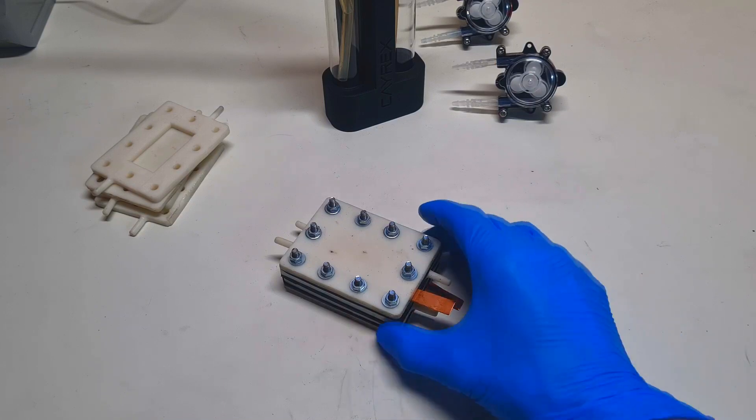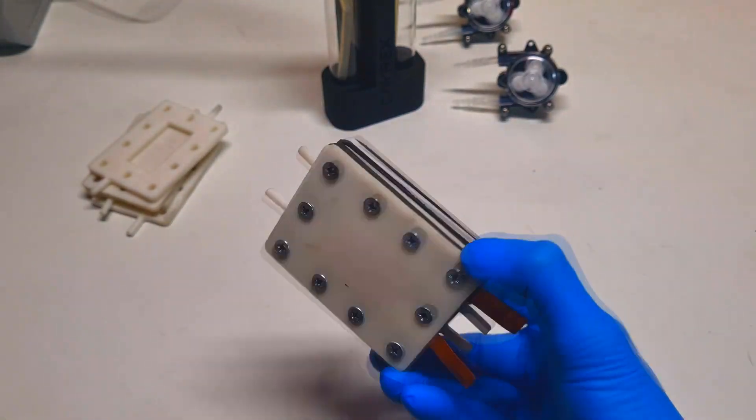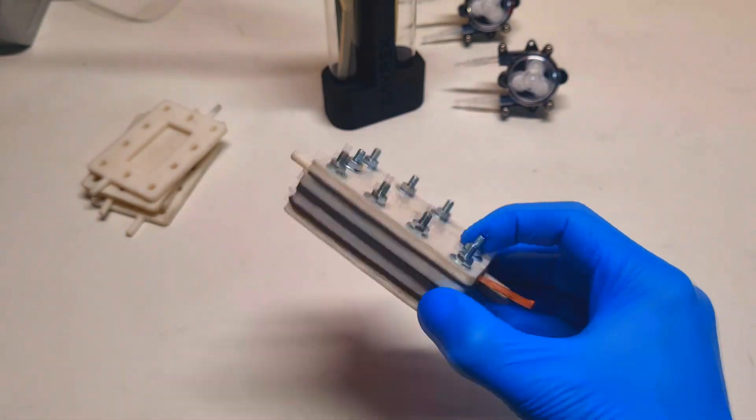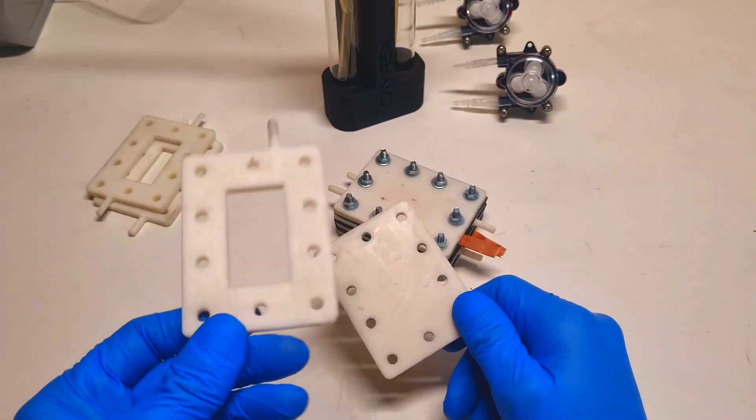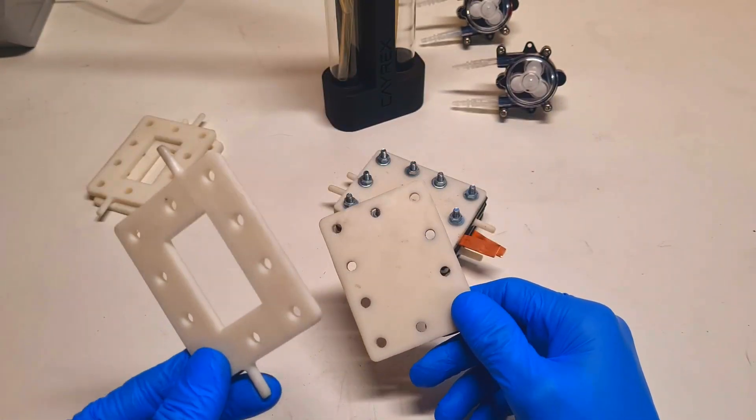In part 1 I made this cell which is mostly 3D printed. The end plate and also the reactor plate are 3D printed.